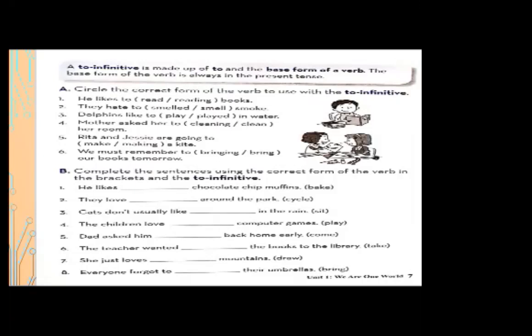Number five: Rita and Jesse are going to make a kite, or making a kite? 'Make' is correct because we use the first form of the verb. Number six: we must remember to drinking our books tomorrow, or to bring our books tomorrow? 'Bring' is the correct form. Circle it.